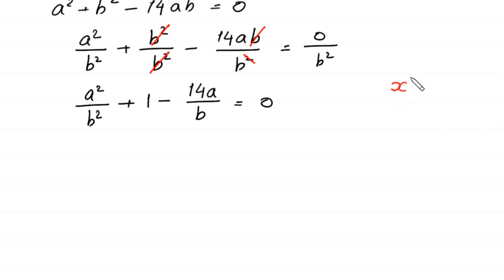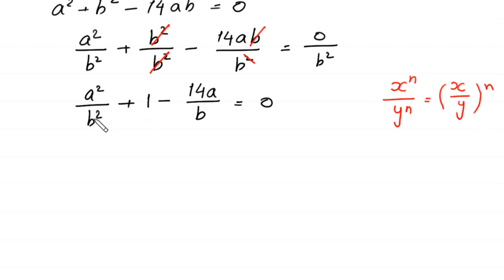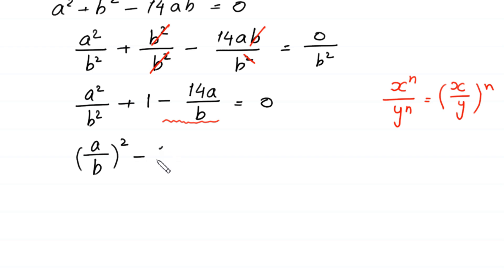By using the property of exponents — x to the power n divided by y to the power n equals (x over y) to the power n — this a squared over b squared can be written as (a over b) whole squared, and this negative 14 times (a over b) plus one equals zero.